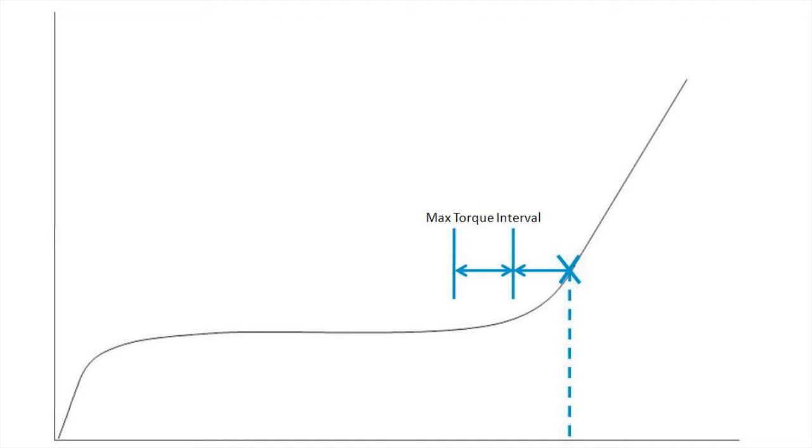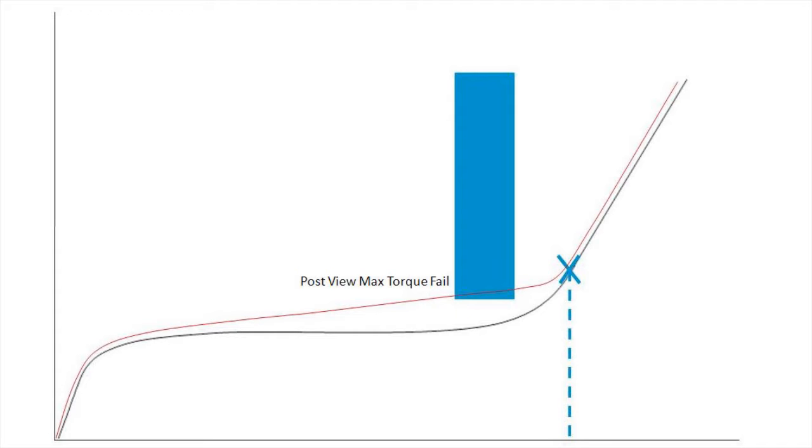The first interval is the max torque interval. A torque level is specified for this interval and if that torque level is exceeded, the fastening will fail on the post-view torque.